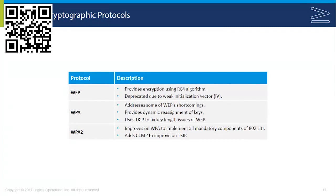Originally we had WEP — Wired Equivalent Privacy — which provided 64-bit up to 256-bit encryption using the RC4 algorithm. WEP is deprecated due to its fixed-size initialization vector, which was only 24 bits, making WEP extremely vulnerable to an IV attack that is able to predict that IV value. We should never be using WEP.